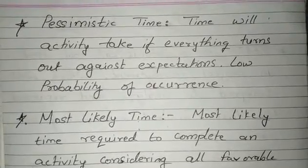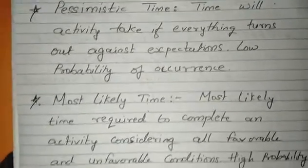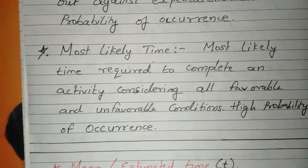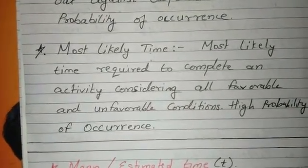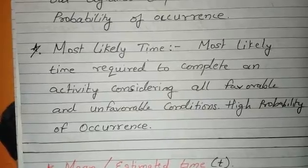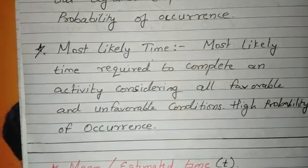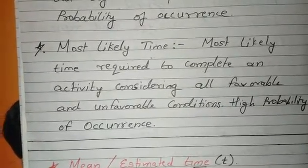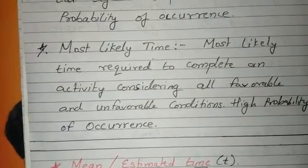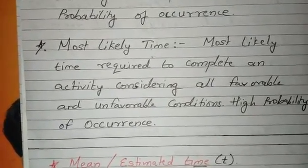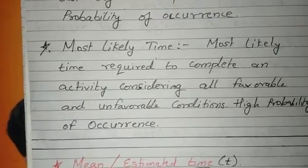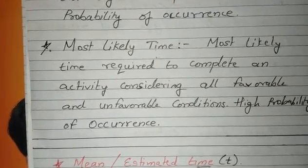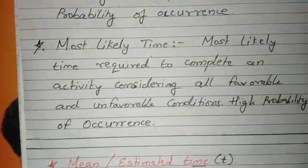Third is Most Likely Time. Most Likely Time required to complete an activity considering all favorable and unfavorable conditions. Most likely time is thinking both optimistic and pessimistic, and it has high probability of occurrence.